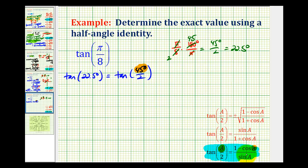Now we'll apply this identity. This function value equals 1 minus cos(45°) divided by sin(45°).